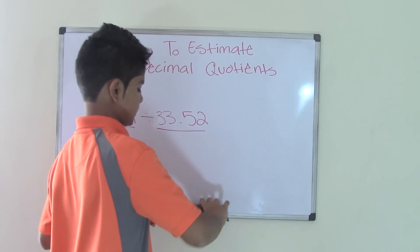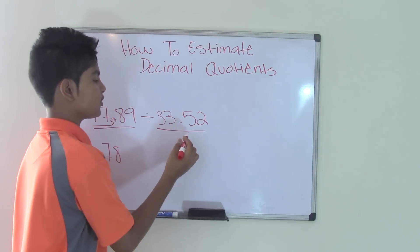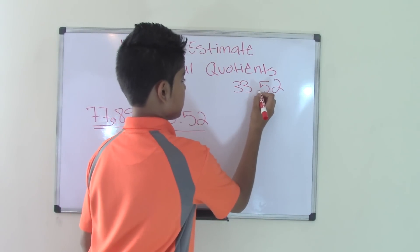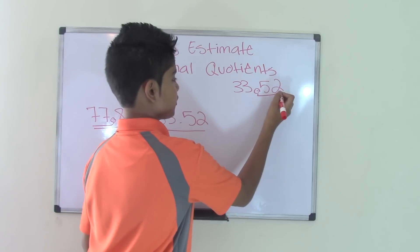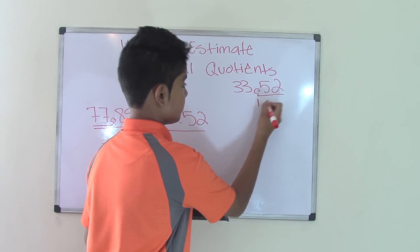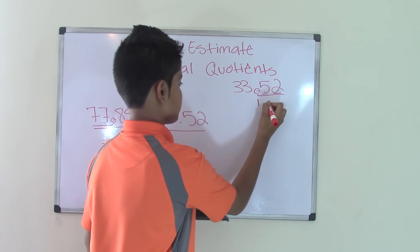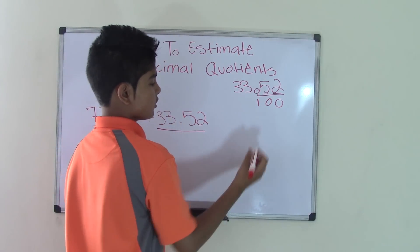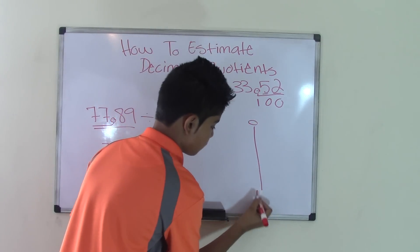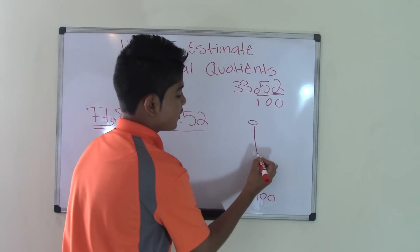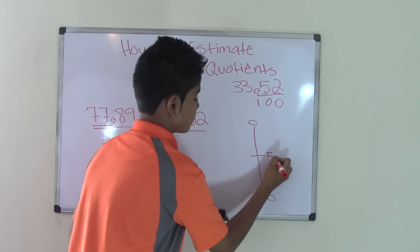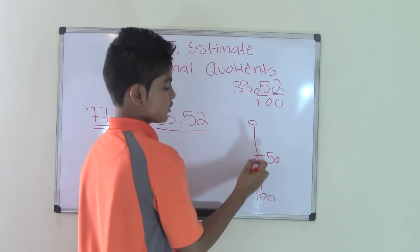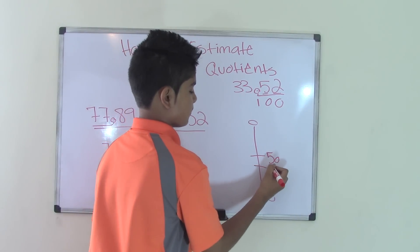Now, let's do the next number, which is 33.52. Remember, look at the number after the decimal point, which is 52. We know that the decimal point always is a 1, and the digits after it count as 0s. So, there's two 0s because two numbers, so 100. Now, we make a range from 0 to 100. We put the number in between, which is 50.